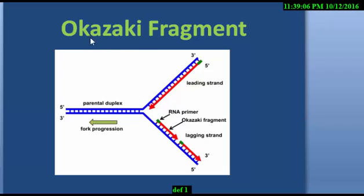Here we will learn about the Okazaki fragment. A small portion of DNA strand — that small portion of DNA strand is called the Okazaki fragment. Ligase enzyme is needed to attach the fragments on the lagging strand, whereas no ligase is needed on the leading strand. Ligase is needed here to attach the two strands together. These short segments of DNA are called Okazaki fragments, and they make up the lagging strand.